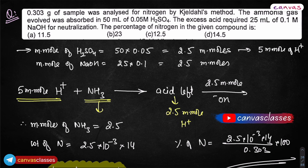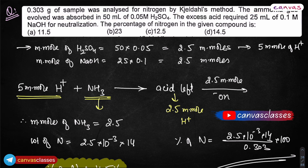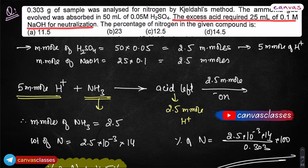Now let me do a simple question. 0.303 grams of sample was analyzed for nitrogen by Kjeldahl's method. The ammonia gas evolved was absorbed in 50 mL of 0.05 molar H₂SO₄. Note for H₂SO₄: one molecule of H₂SO₄ generates 2 H⁺. The excess acid required 25 mL of 0.1 molar NaOH for neutralization. Find the percentage of nitrogen in the given compound.